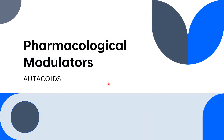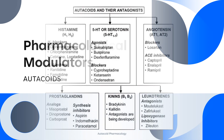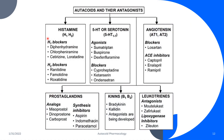We also have the pharmacological modulators of autacoids. These autacoid modulators interfere with the synthesis, inhibit the release, or inhibit the receptors upon which the autacoid acts. The following are examples of autacoids and their pharmacological modulators or antagonists.